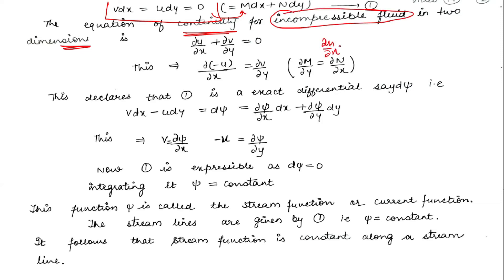del u by del x plus del v by del y is equal to 0. This way we can write del u by del x is equal to del v by del y.